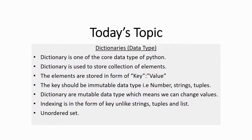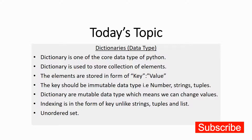Hello everyone, welcome back. Today's topic is dictionaries, which is one of the core data types of Python. It is used for a collection of elements, just like lists and tuples. The elements are stored in the form of key and value. This is the big difference in a dictionary compared to a list — every value will be associated with a key.